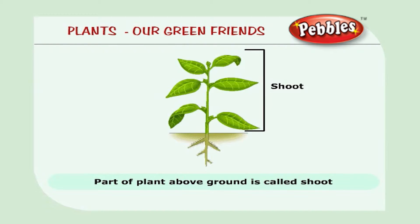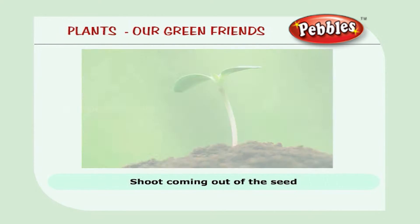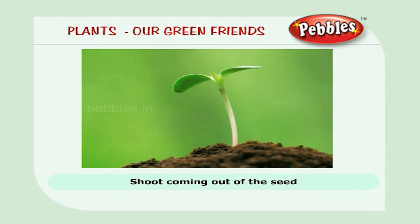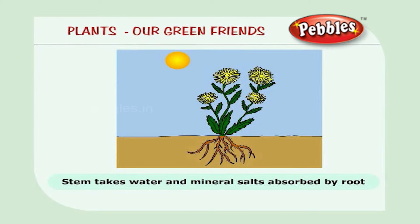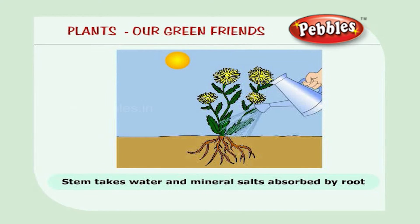The part of the plant which is above the ground is called the shoot. The main part of the shoot is the stem. It has many branches. It is very beautiful to see the shoot coming out of the seed.